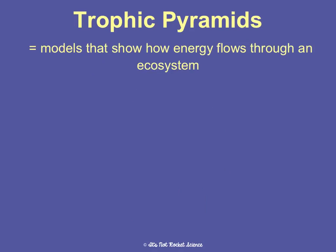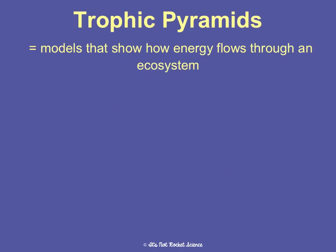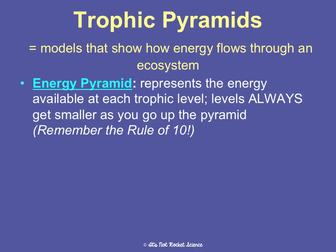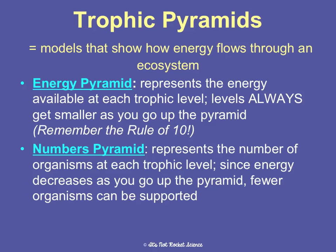We can transfer this to a trophic pyramid, a model that shows how energy flows through an ecosystem. There are three types of trophic pyramids. An energy pyramid shows the amount of energy available at each trophic level — it always gets smaller going up because of the rule of 10, which is why it's pyramid-shaped. The base has the most energy and is widest; the top has the least and is narrowest. A numbers pyramid shows the number of organisms at each trophic level. For a stable ecosystem, we should have the most producers and the fewest high-level consumers.